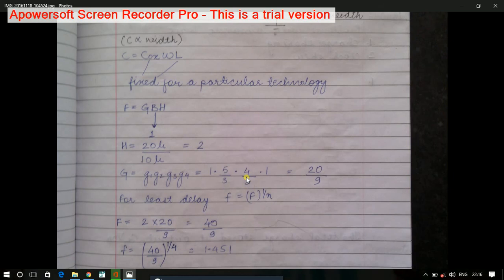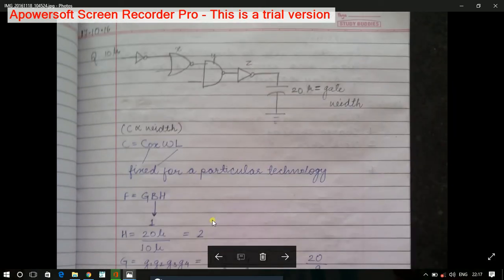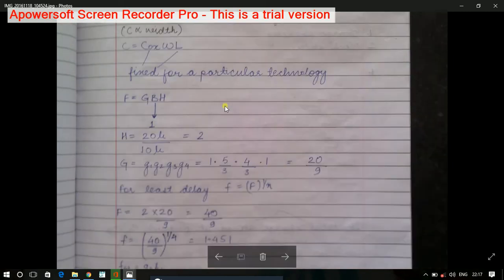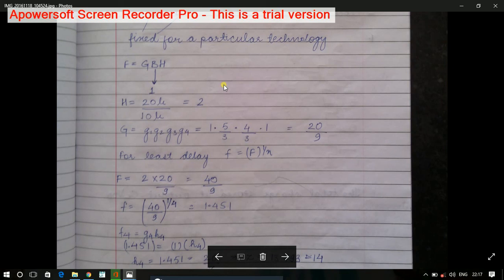Capital F is 2 into 20/9, and the branching effort here is 1 because branching effort is the number of outputs it is driving upon the number of inputs through which it is being driven. For example, for the first NAND gate, it is 1/1. Branching effort is also multiplication of the branching efforts of the individual stages, so here it is 1.